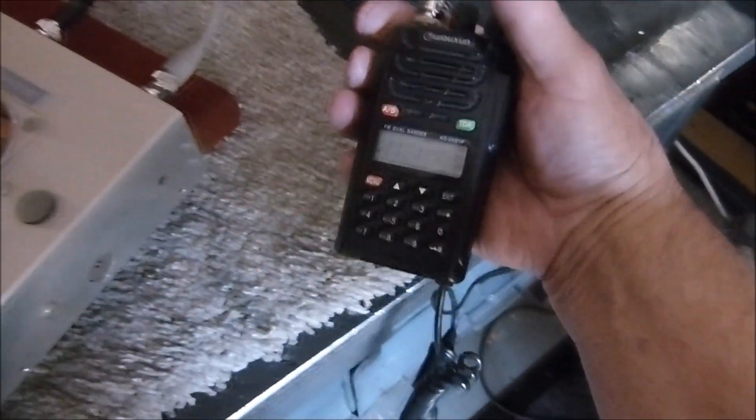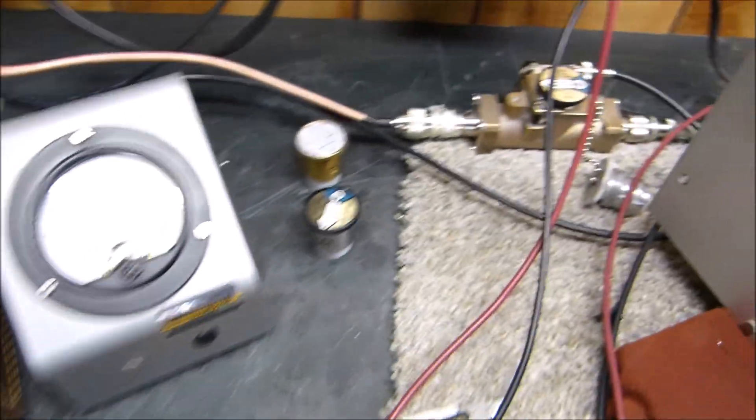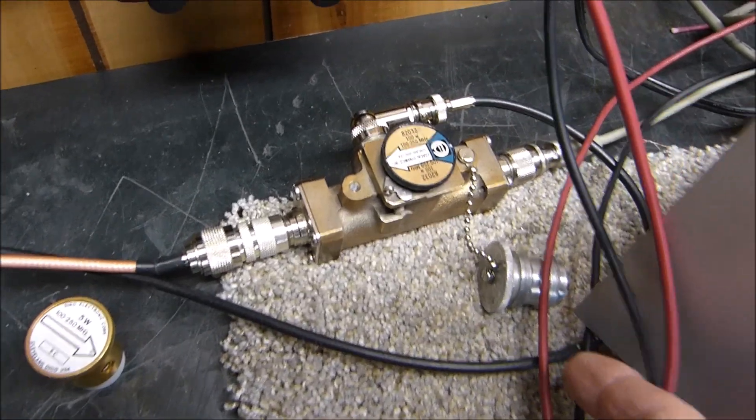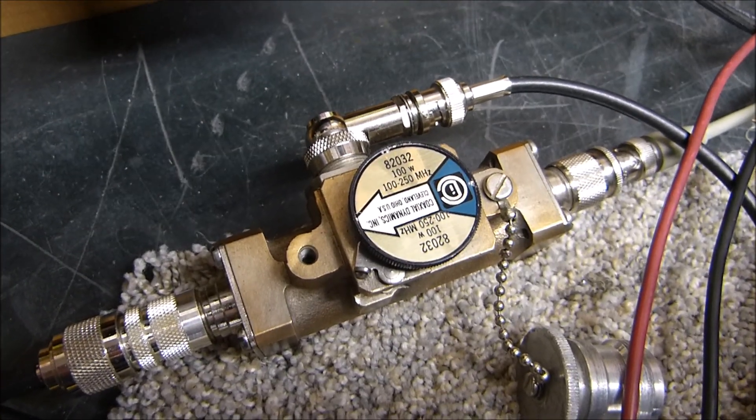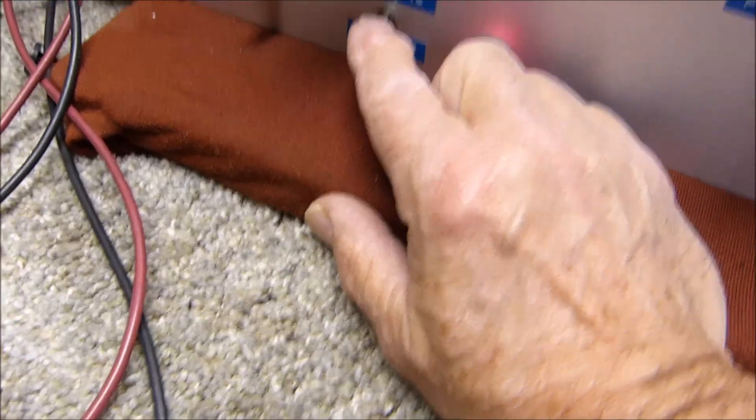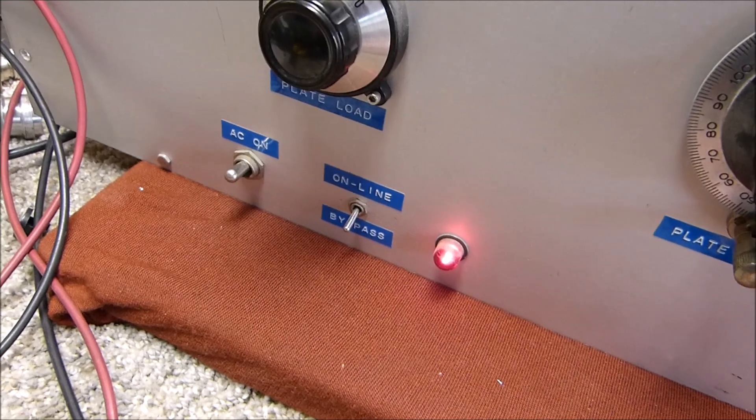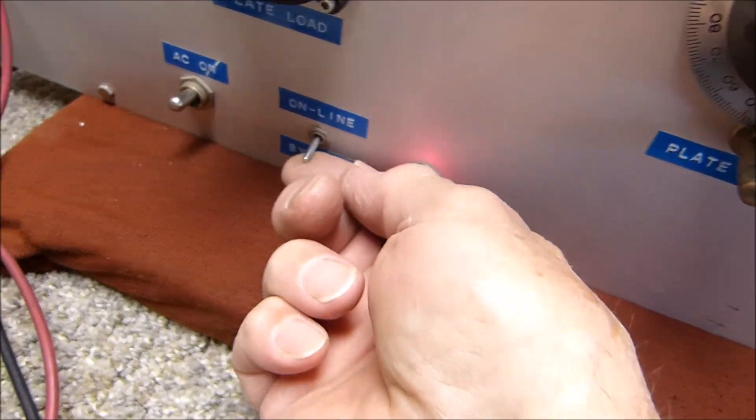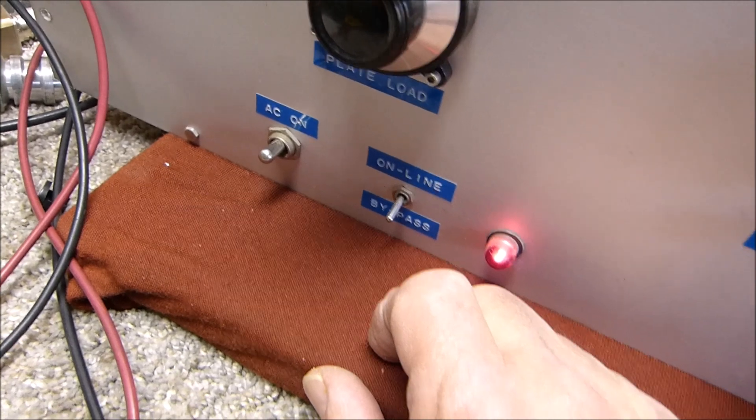I'm driving it with this little HT right here, driving at 146.52 simplex into this dummy load. I'm measuring it through this bird line section - it's 100 watt. If I put it in bypass, the output just feeds straight through the amplifier. If I put it online, the RF from the HT is what actually actuates it.